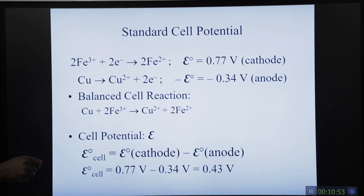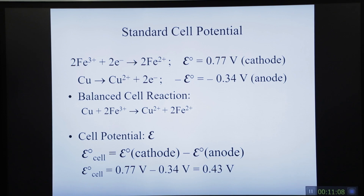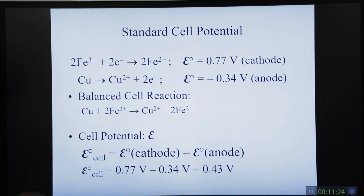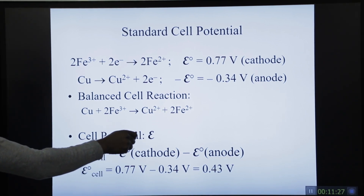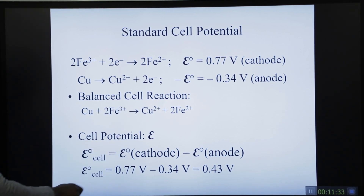Iron serves as our cathode and copper as our anode. The balanced cell reaction is: Cu + 2Fe³⁺ → Cu²⁺ + 2Fe²⁺. To calculate the cell potential: E-cell = E-cathode − E-anode = 0.77 − (−0.34) ... wait, using the corrected values: E-cell = cathode − anode = 0.77 − 0.34 = 0.43 V.